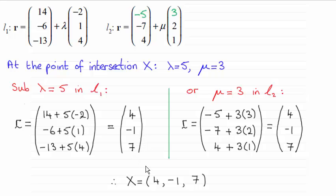But do remember that it was asking for the coordinates of X, not the position vector. So X then has coordinates 4, minus 1, 7. OK?